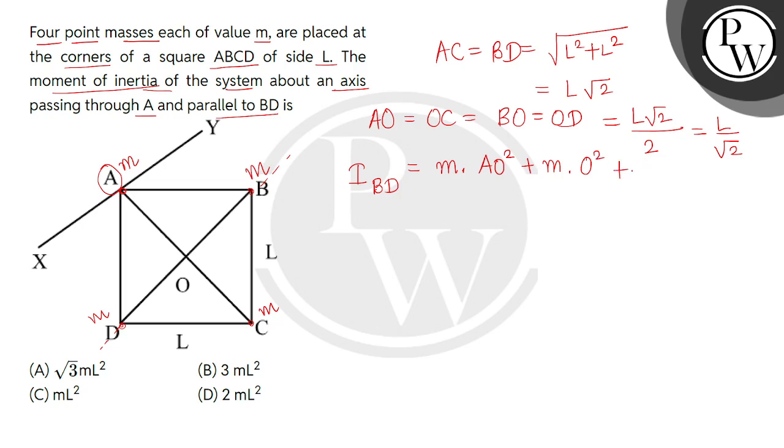The mass situated at C, which is again M, and its distance from BD is the perpendicular distance OC square plus. D has the same case as B - D's mass is M but the distance from the axis of rotation is 0.